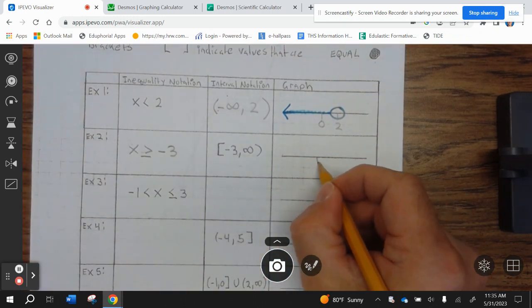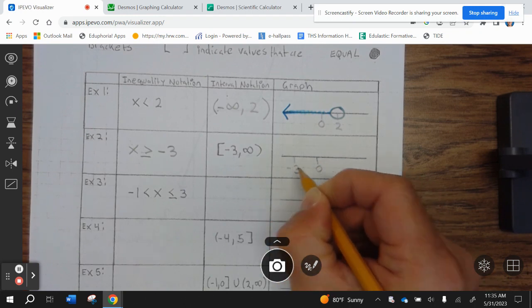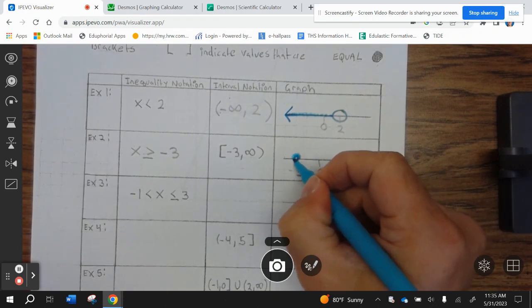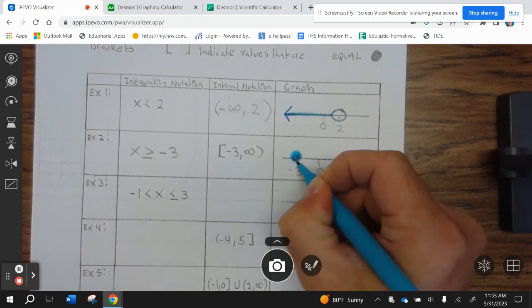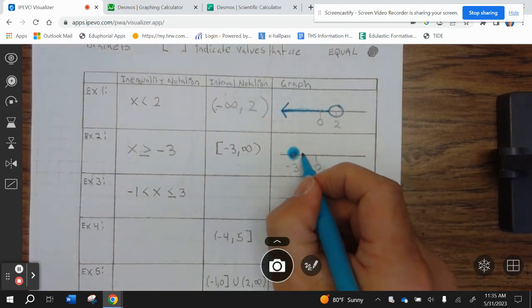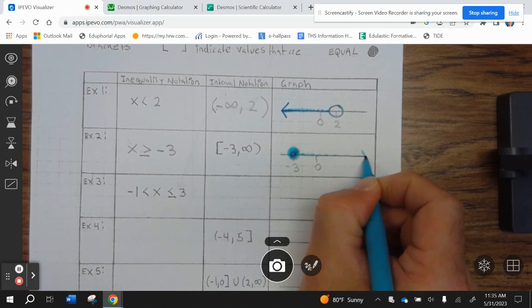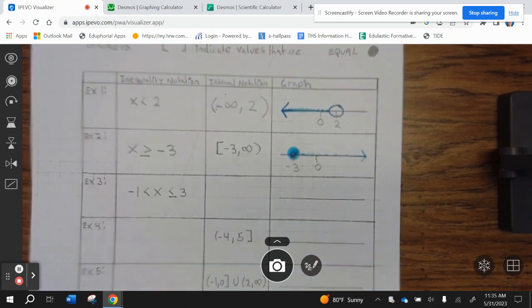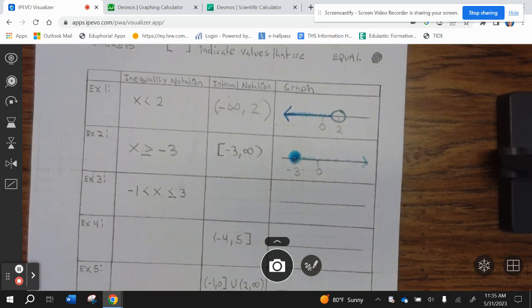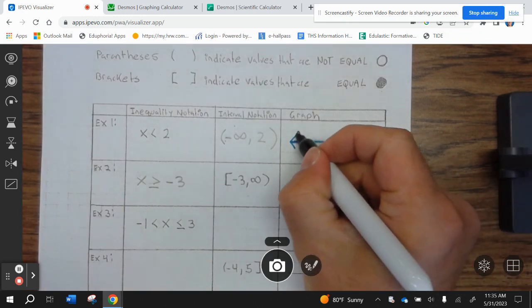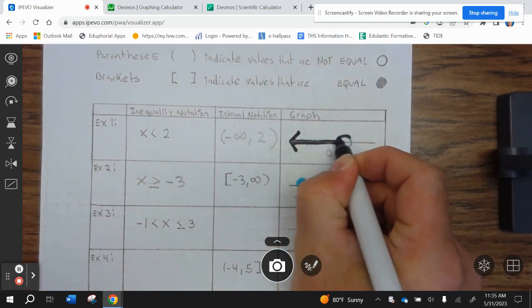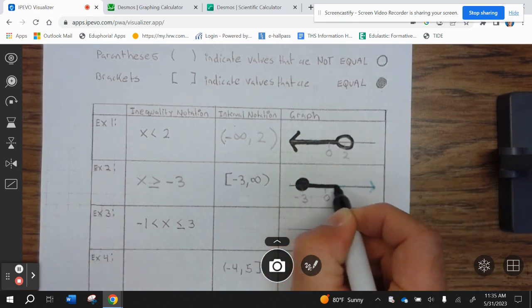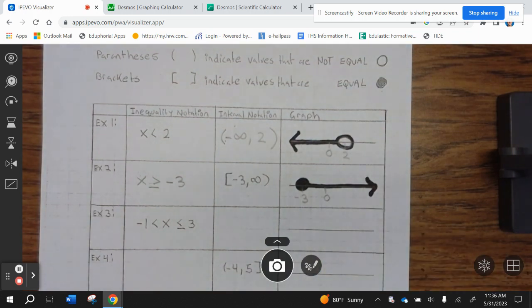Now, again, we're going to use 0 because negative 3 would be right here. That means we have a closed circle. And then we're shading to the right. And it looks like my blue is running out. So, let me convert over to a different color. Blue isn't working well, so let me do this. So, it's very clear where the shading is.